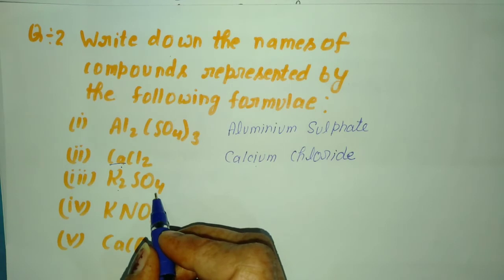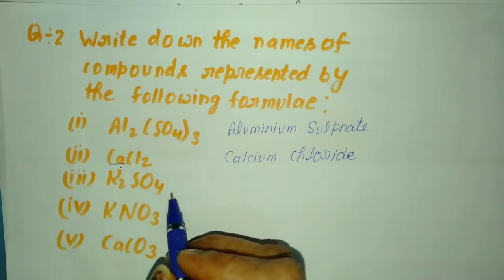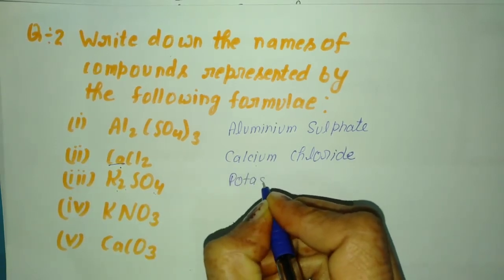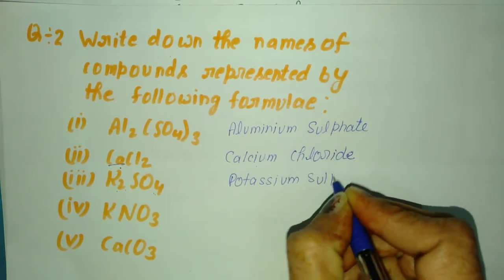And K2SO4 - K means potassium and SO4 means sulfate. This name is potassium sulfate.